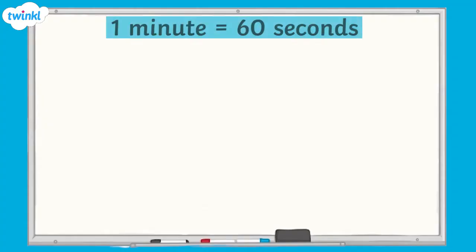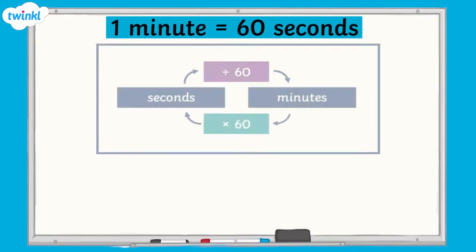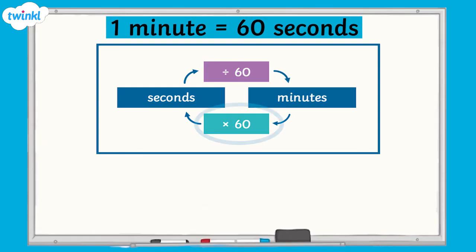Now that we've recalled some of the key units of time, let's take a look at how to convert between seconds and minutes. There are 60 seconds in one minute. Therefore, to convert minutes to seconds, we multiply the number of minutes by 60.